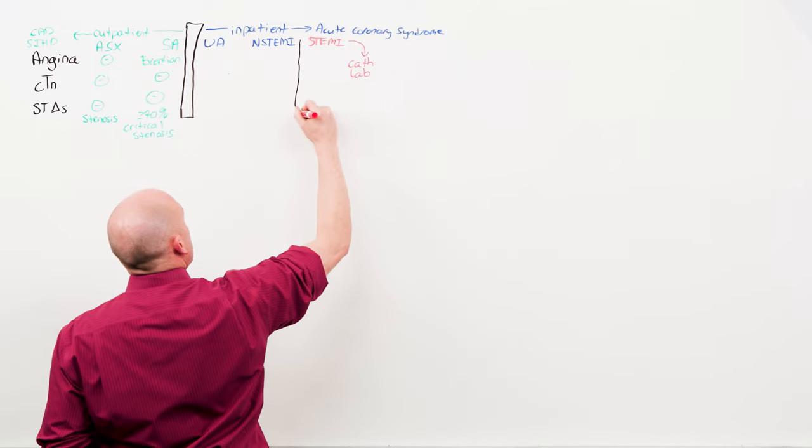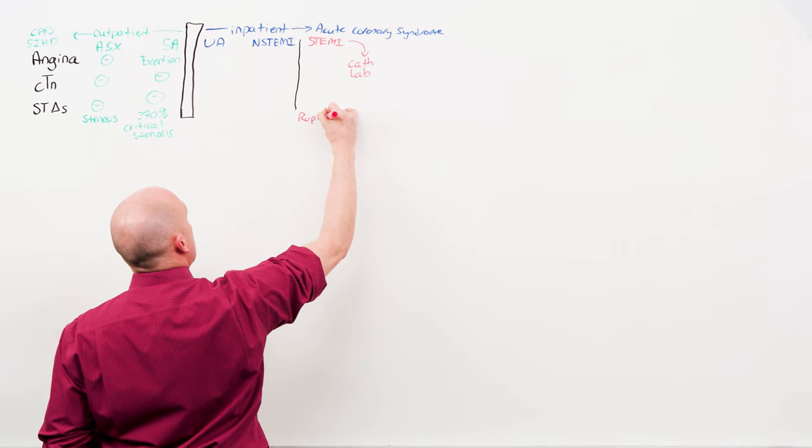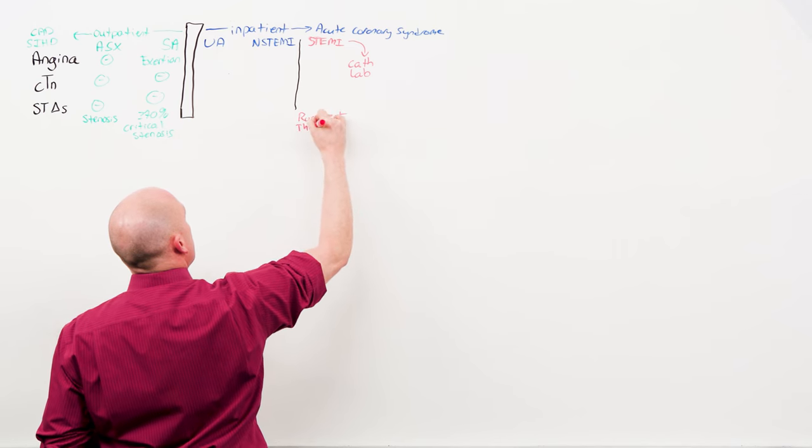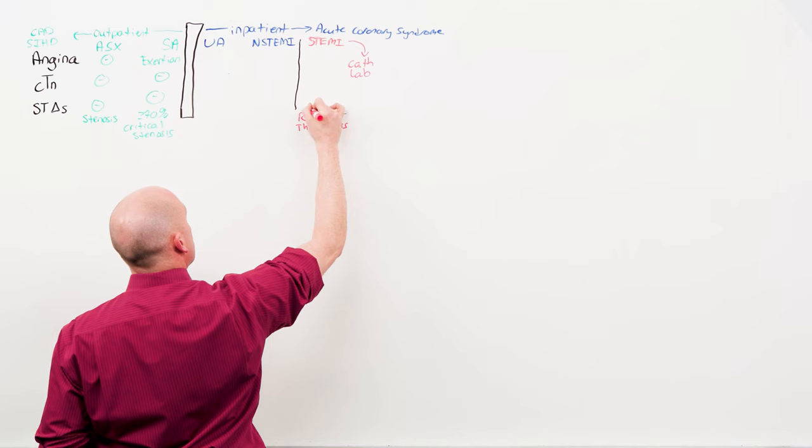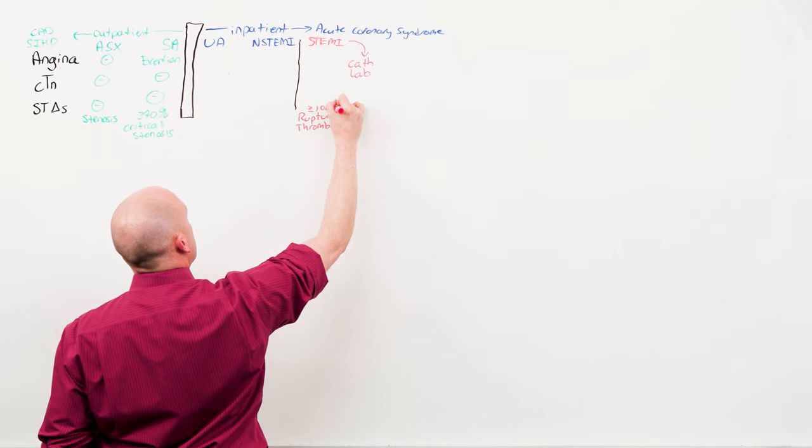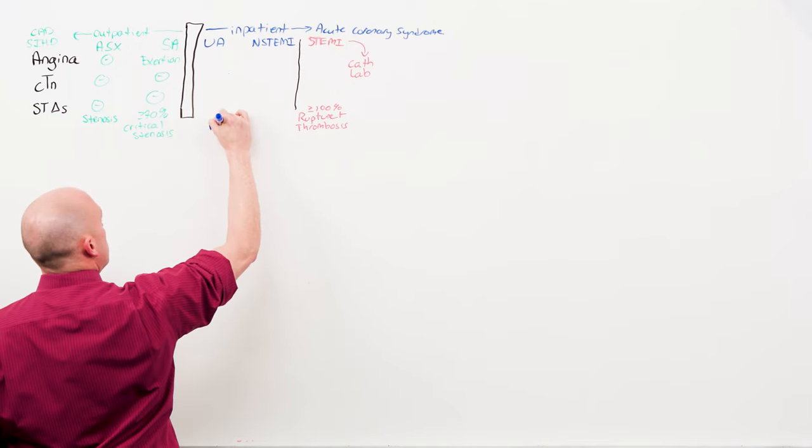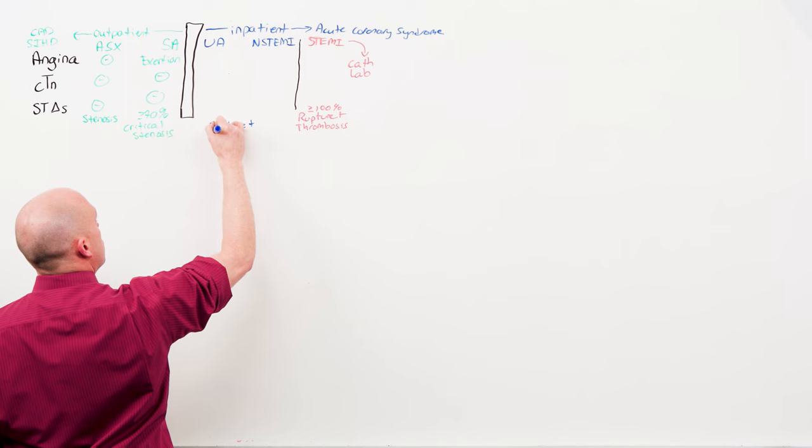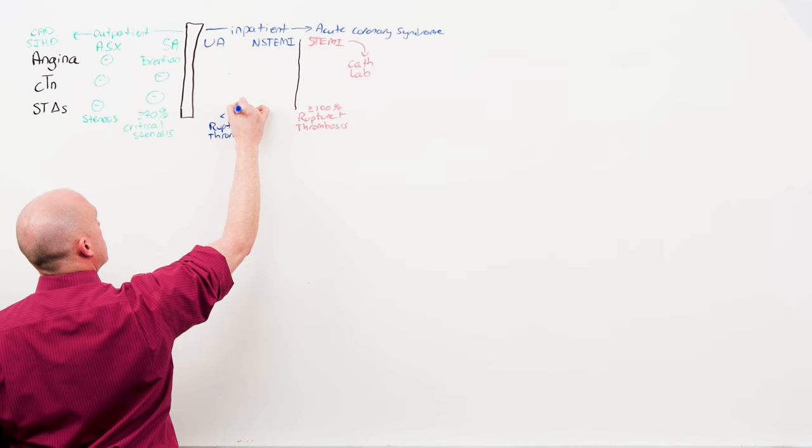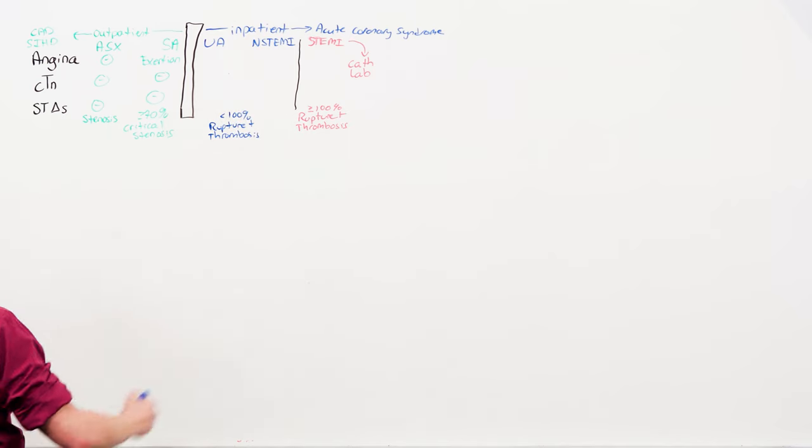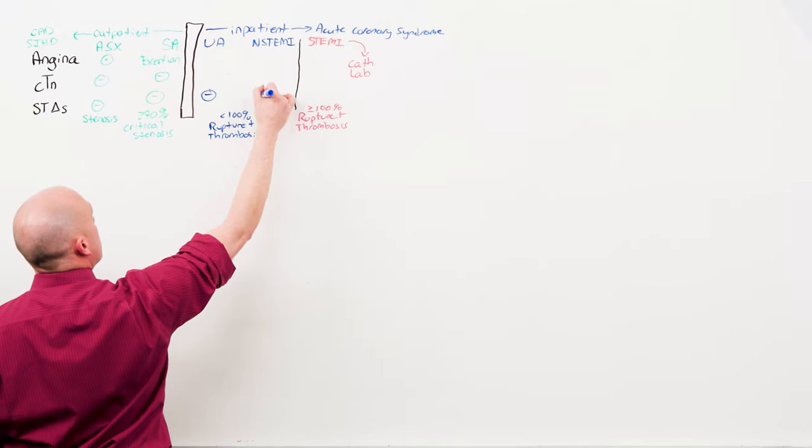ST segment elevation myocardial infarction is the result of this atherosclerosis undergoing rupture and thrombosis. To get these segment elevations, you're going to need a transmural infarction, which means a complete occlusion. Whereas the blue ones are also an acute event, there is rupture and thrombosis, but it is not 100%. Because they're not 100%, you're not going to see a transmural infarct, and so you won't get ST segment elevations.